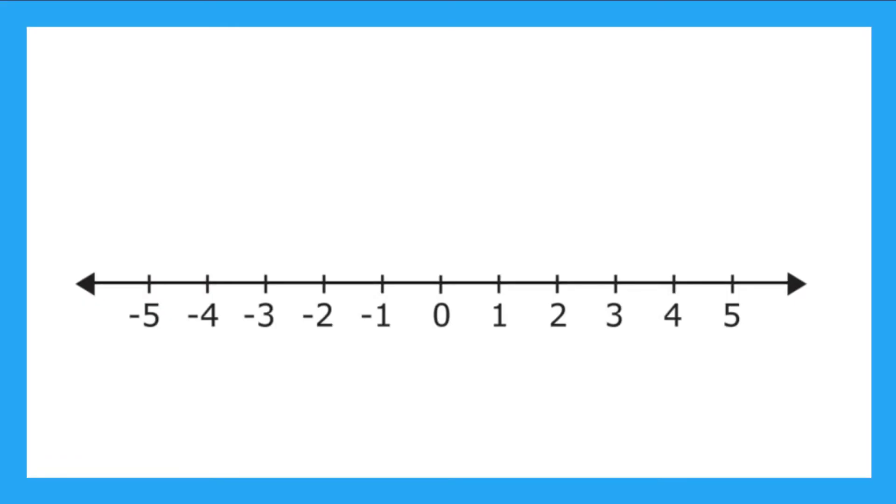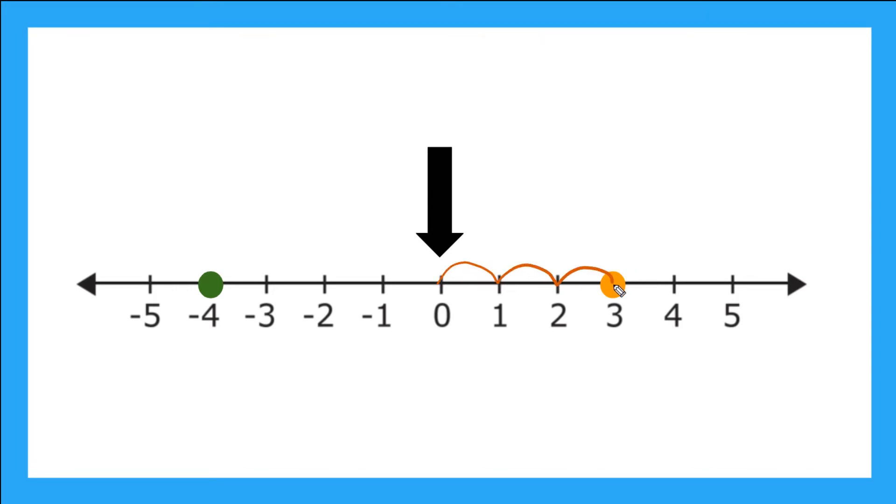Another way to think about this is with our number line. If we have a point here at three and a point here at negative four, the absolute value of these numbers is their distance from our starting point, zero. So what's the distance from zero to three? Well, we need to move over one, two, three places to get to three, so that means the distance from zero to three here is three.